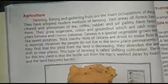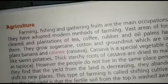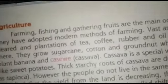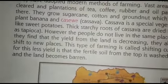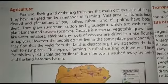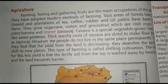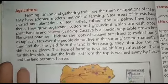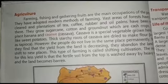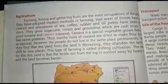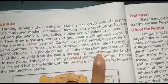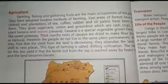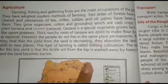Farming, fishing, and gathering food are the main occupations of the people. They have adopted modern methods of farming. Forest areas have been cleared for the plantation of tea, coffee, rubber, and oil plants. Other crops include groundnuts, fresh crops, sugar, cotton, and cashew. Special vegetables like sweet potatoes are also grown. The fruits are dried and made into flour. Shifting cultivation is a type of farming practiced here.